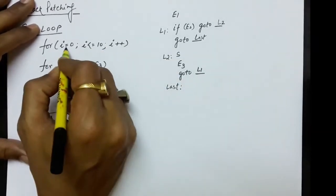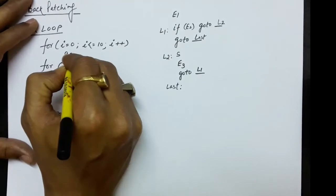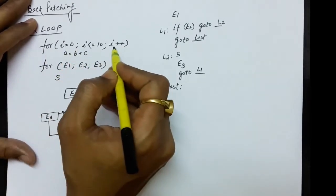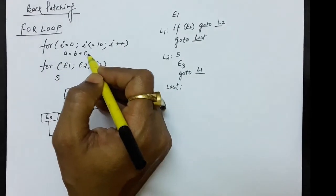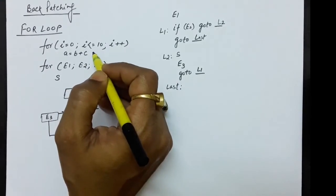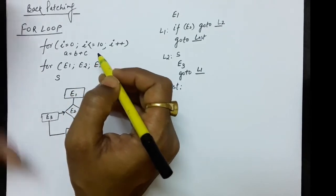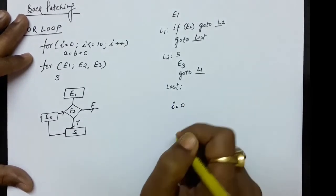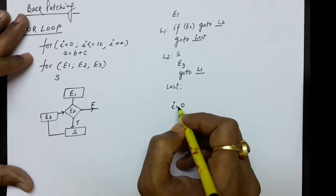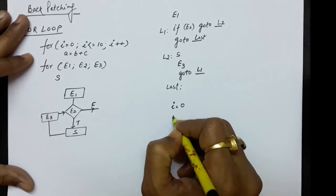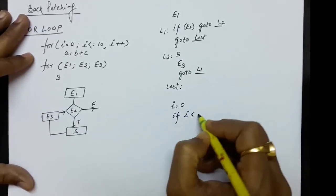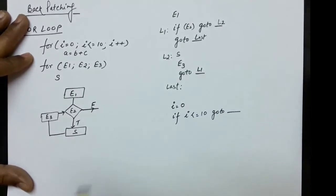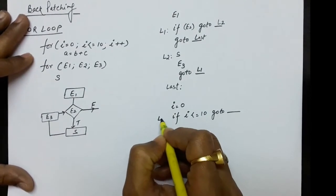Let's take an example: for(i = 0; i <= 10; i++), with statement S being A = B + C. First we do the initialization: i = 0. After that, we check the condition i <= 10. If i is less than or equal to 10, we go somewhere — we'll write where using backpatching. Let's call this level L1.